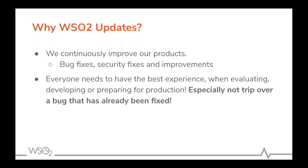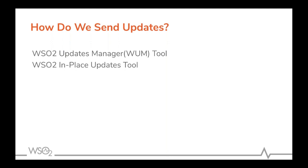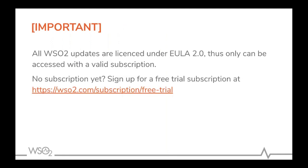How do we send these updates? We mainly have two tools — both command line tools — namely the WSO2 Updates Manager, commonly known as the WAM client tool, and the recent addition, the In-Place Updates tool. All updates are licensed under EULA 2.0 and can be accessed only using a valid subscription. This subscription may be a paid subscription or a free trial subscription. If you do not have a subscription yet, you can sign up for a free trial which is valid for two weeks from the mentioned URL.